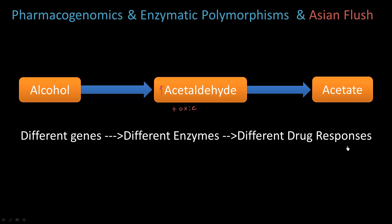Pharmacogenomics is really about connecting how different genes lead to different drug responses, and it's not just limited to different enzymes. But enzymes and the genes coding for them are the most studied component of pharmacogenomics. Our goal is to develop a test to look at people's genes to be able to predict drug responses before they occur.